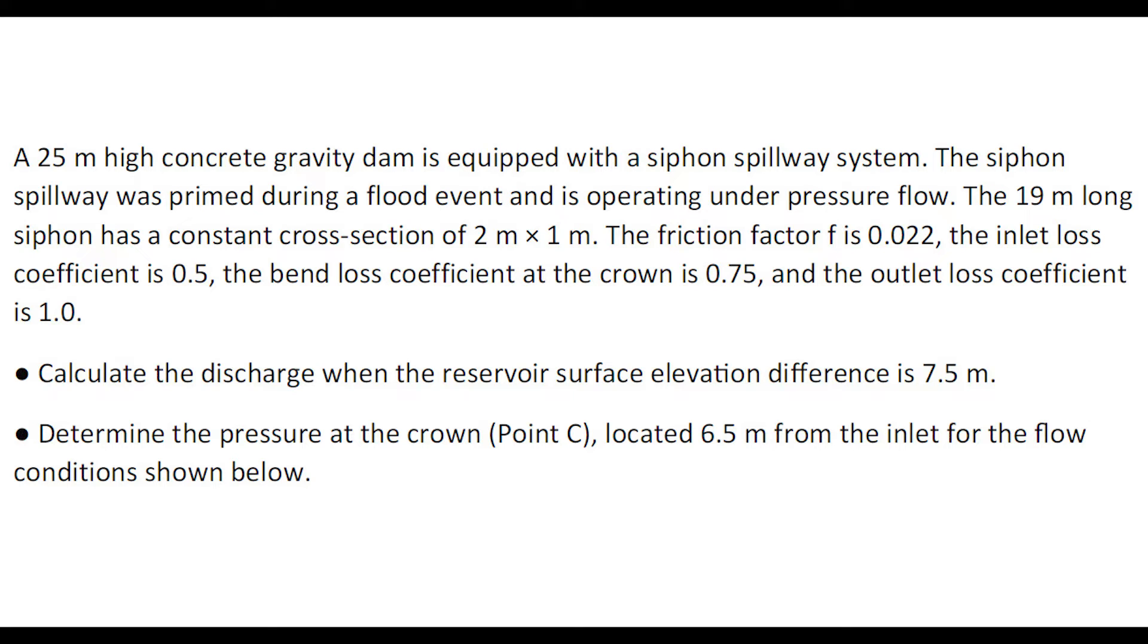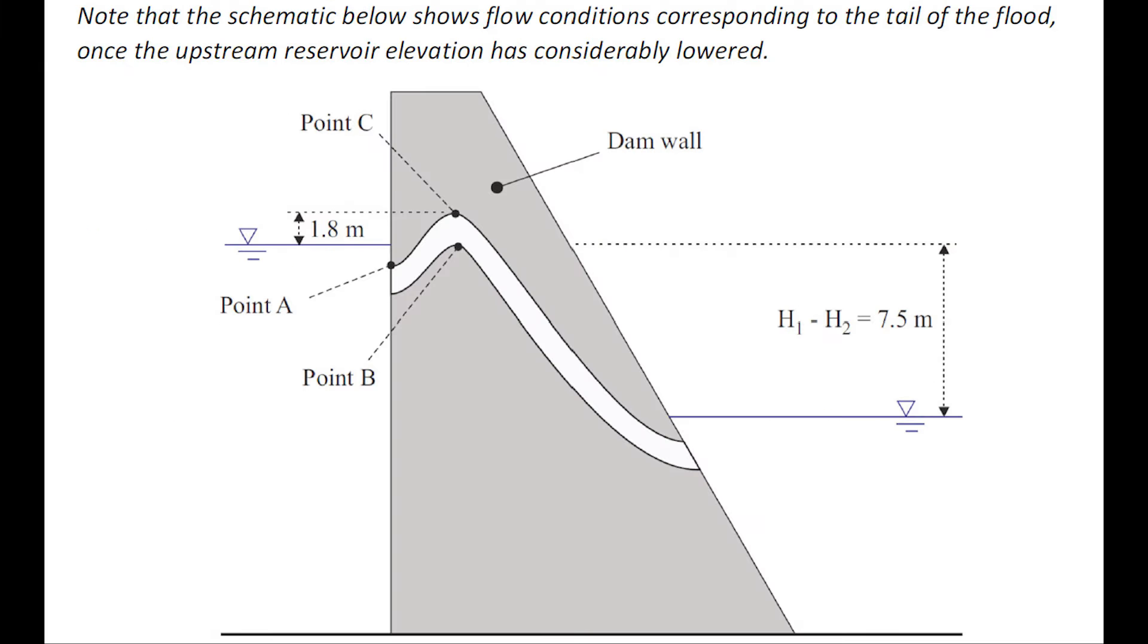Let us calculate the discharge when the reservoir elevation difference is 7.5 meters, and let us determine the pressure at the crown located at 6.5 meters from the inlet for the flow conditions shown here.